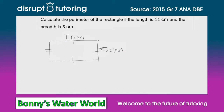Using that, we can determine that this side is also 11 centimeters and this side is also 5 centimeters. As a result, we're able to quite easily calculate our perimeter. So let's write our perimeter formula: perimeter equals 11 plus 11 plus 5 plus 5.